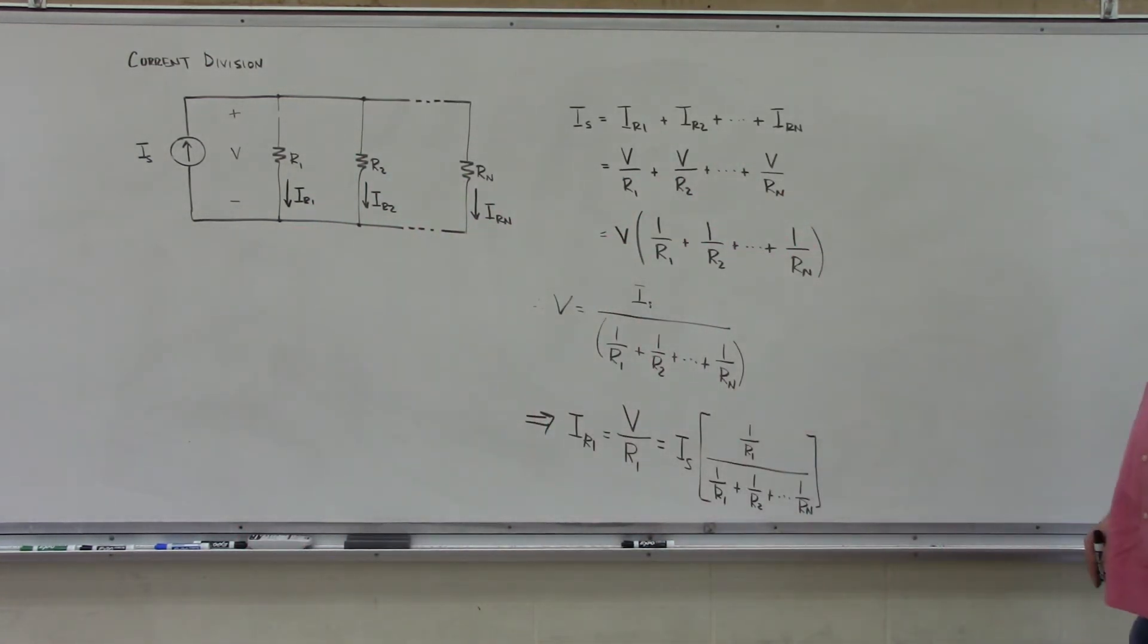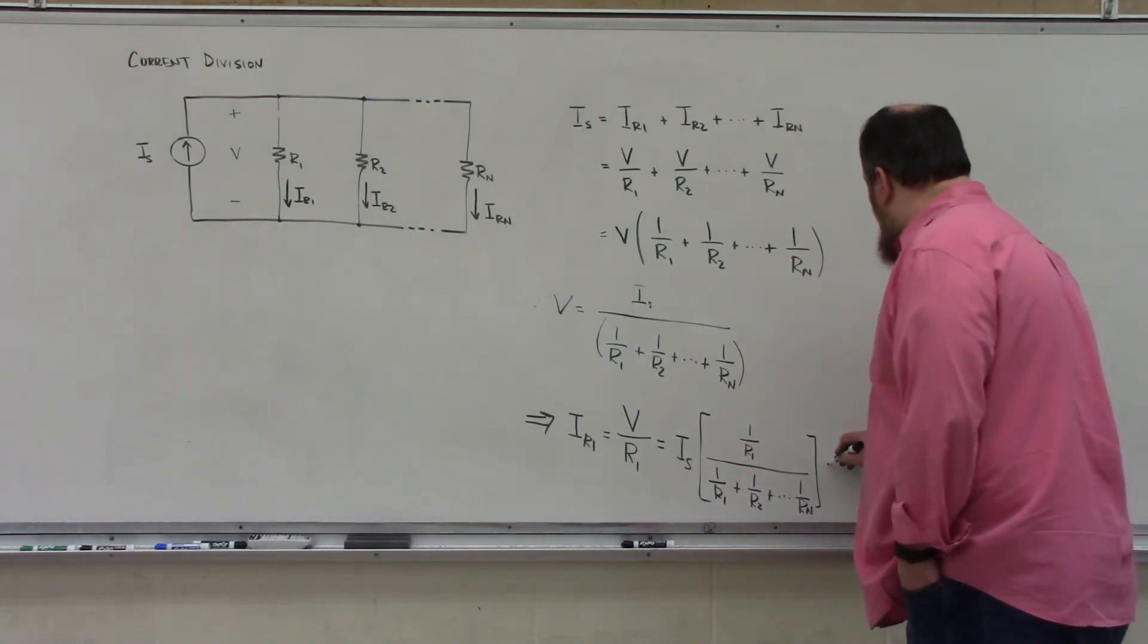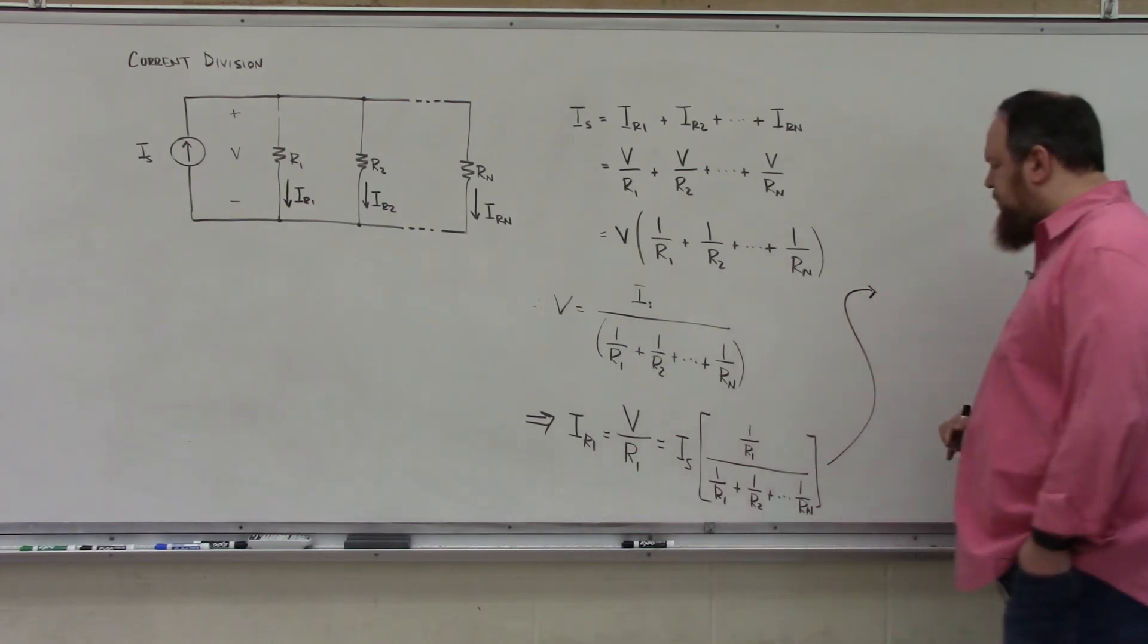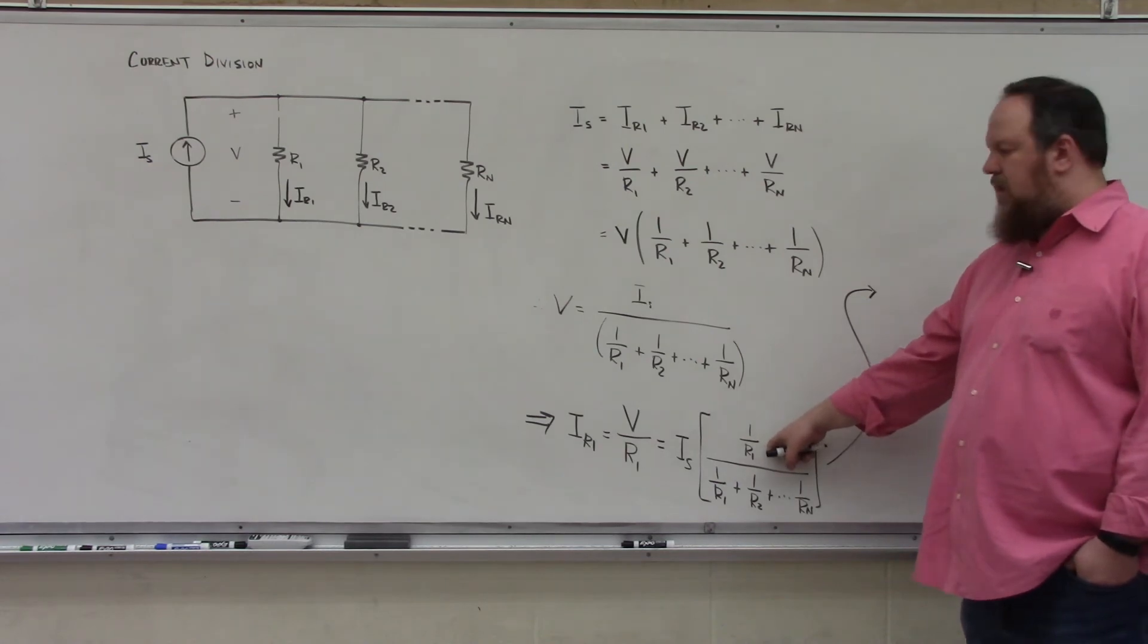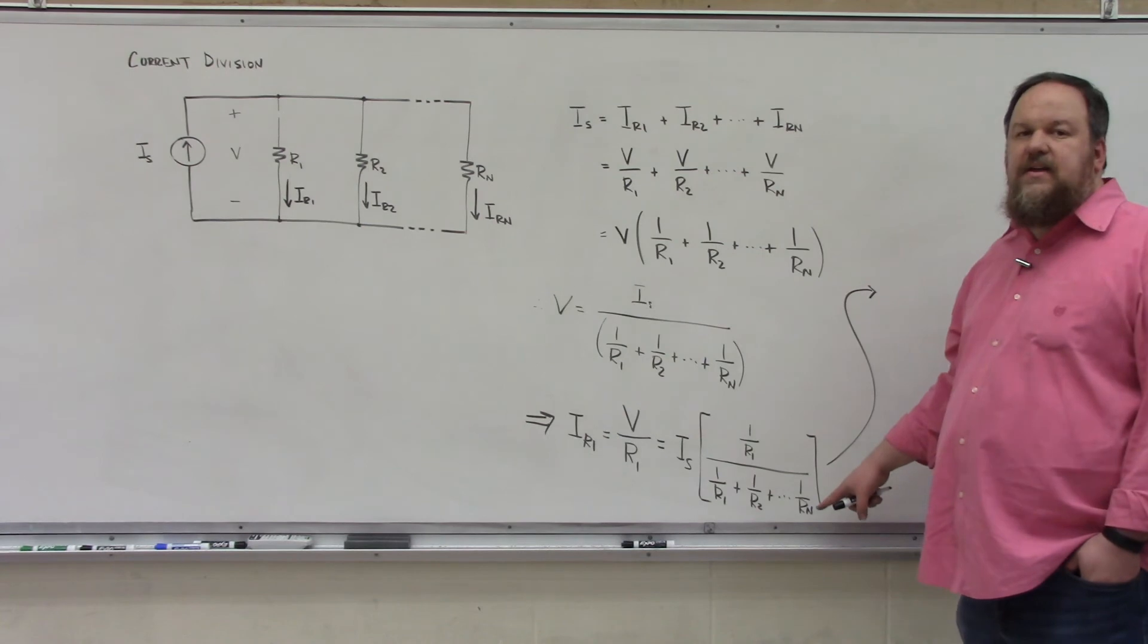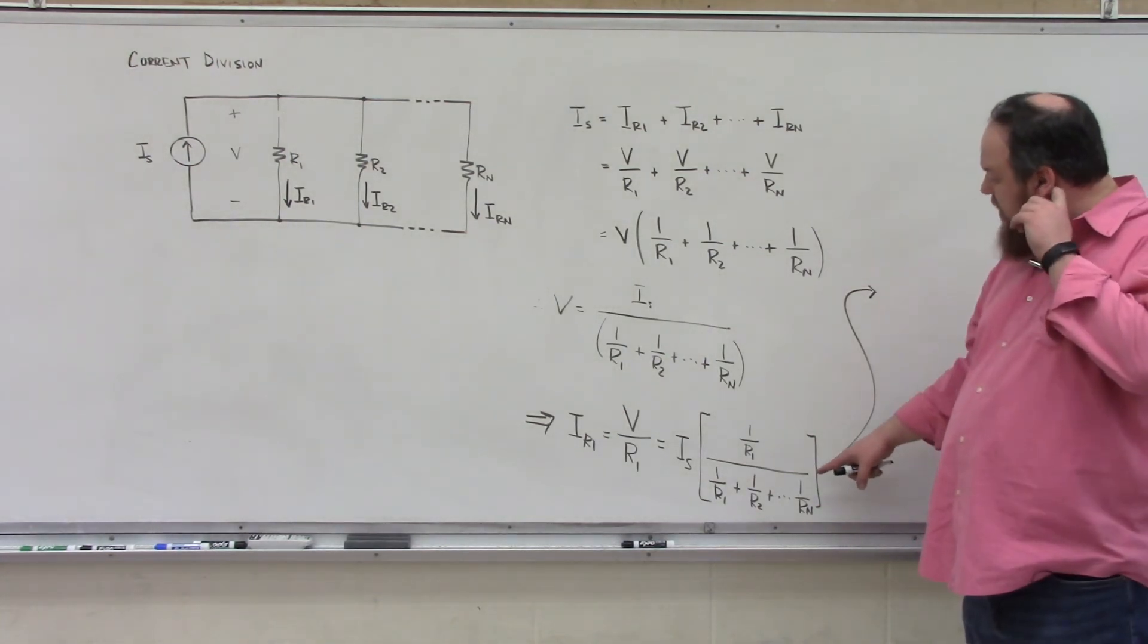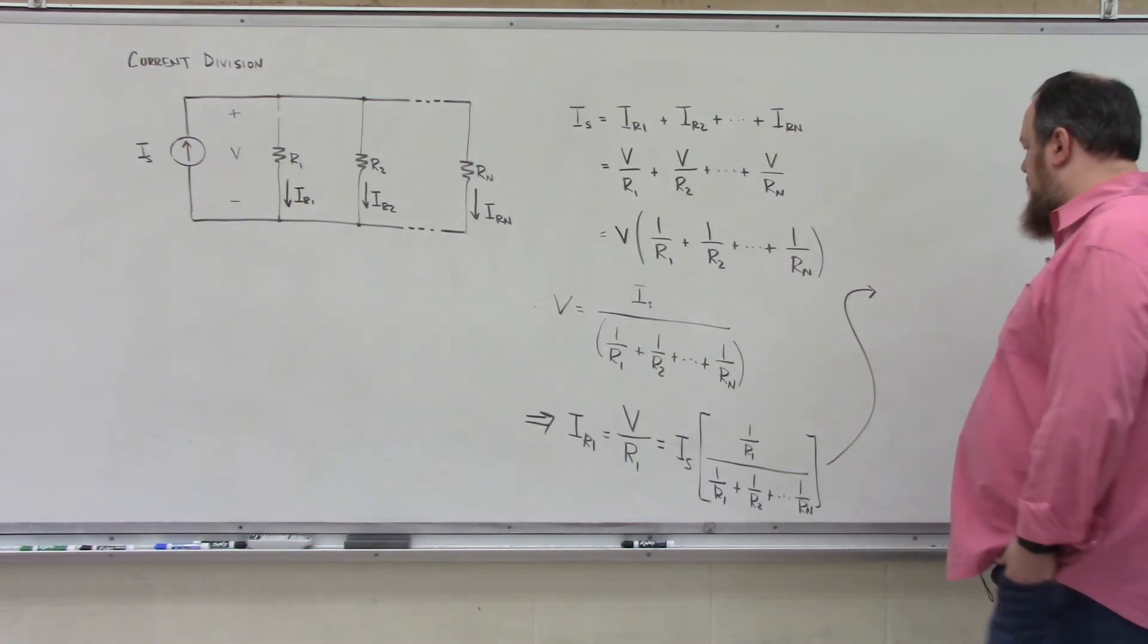What's interesting about this is that I could do one other very simple manipulation here. If we didn't have this 1 over R1 in the numerator here, this whole bit would represent the equivalent parallel resistance, right? We have 1 divided by the sum of all the resistors in parallel.